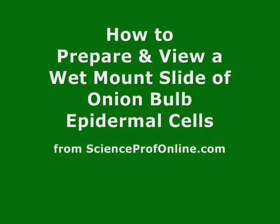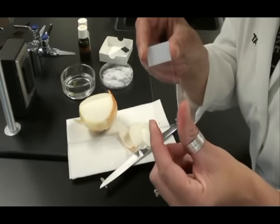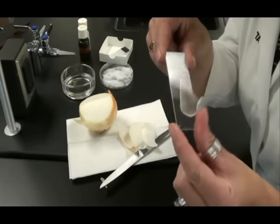In this video, I'm going to show you how to prepare a wet mount slide of stained onion epidermal cells. Here's my microscope slide. I want to have that out and ready.